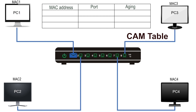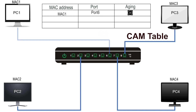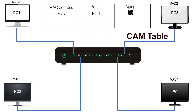For example, PC1 sends a frame to PC4. The switch receives it on port 1. Since the table has no entry for PC1's MAC address, the switch adds a new entry for it. Now suppose you move PC1 from port 1 to port 6. PC1 sends a frame; it reaches the switch on port 6. The switch finds PC1's MAC address in the table but with a different port number. In this situation, the switch updates the port information along with the timer. This feature makes the relocation of devices completely hassle-free.